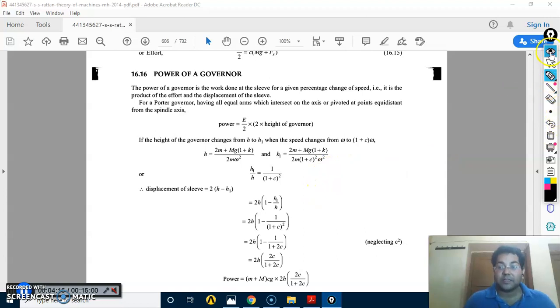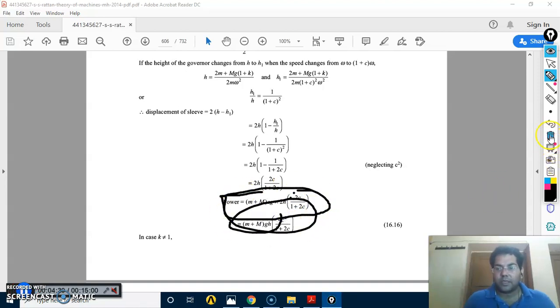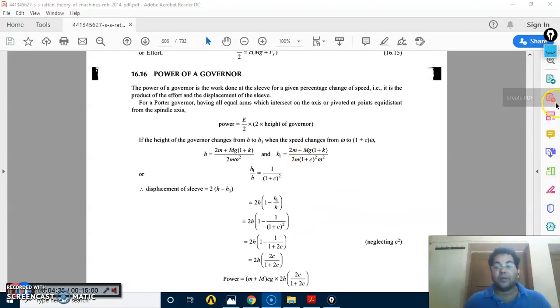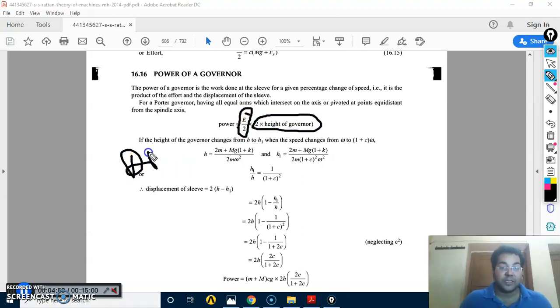So when we talk about Porter governor, it is very easy. The calculation here is—this is called total power of the governor. Power equals effort into displacement. The formula is two times.